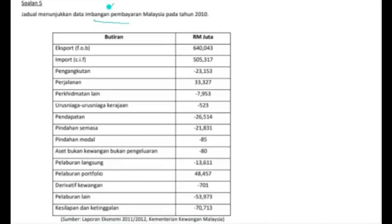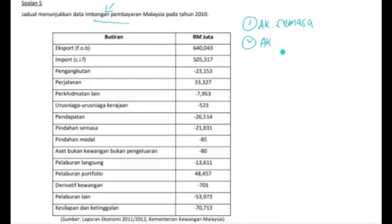Sekarang saya nak pelajar fokus yang ini dulu — imbangan pembayaran. Untuk maklumat pelajar, imbangan pembayaran ini sebenarnya mempunyai tiga akaun yang utama. Bagi akaun yang pertama itu, dia adalah imbangan akaun semasa. Diikuti dengan akaun yang kedua iaitu imbangan akaun modal dan kewangan. Kemudian kita ada satu lagi akaun iaitu imbangan akaun keseluruhan.